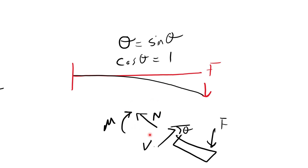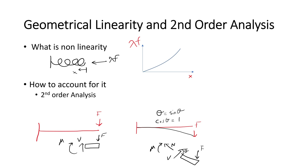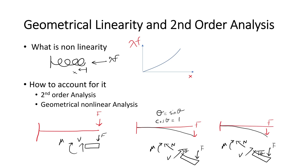In second-order analysis, the load is applied on the undeformed geometry and equilibrium equations are developed. This introduces a new component of internal force running along the length of the beam — in this case, an axial tensile force. In second-order analysis, deformations are still considered small, so trigonometric idealizations are made such that sin(θ) ≈ θ and cos(θ) ≈ 1. To increase one level of complexity and accuracy, we introduce geometrically non-linear analysis, where deformations are now considered significantly large and trigonometric idealizations are no longer performed. Of these three models, geometrically non-linear is the most accurate yet most complex.